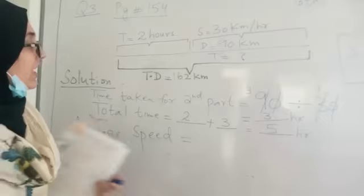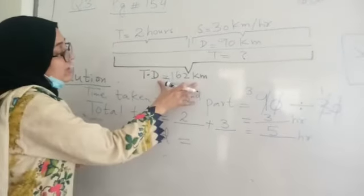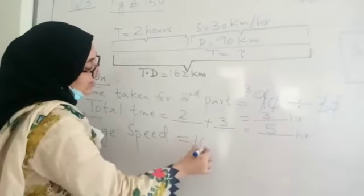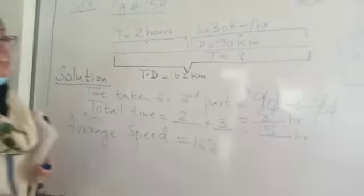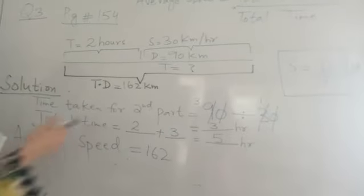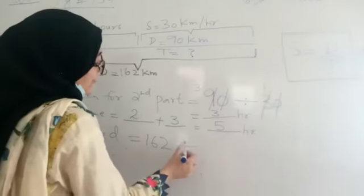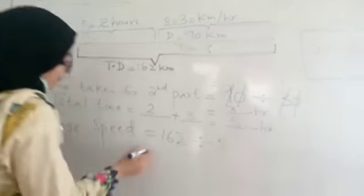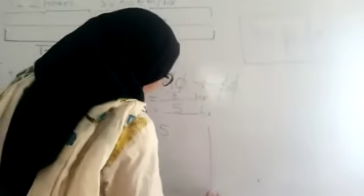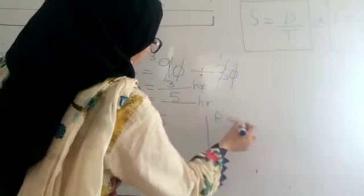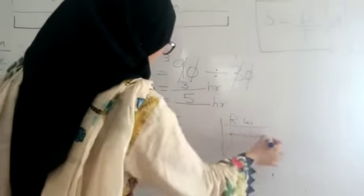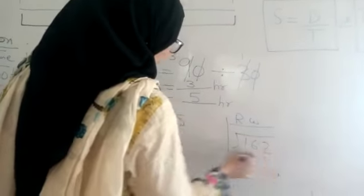Now the average speed. For the average speed you will use the total distance which is 162 and divide it by the total time which you have found, which is 5. Now in your rough work you will just divide this and then find the average speed easily. I am going to just divide it.